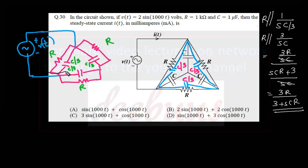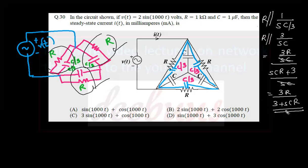This is basically the impedance of R parallel C/3, or R parallel with 1/S(C/3). Now checking at this side: one R parallel C/3 is in series with another R parallel C/3. So for this side, the total impedance must be 6R, that is 3R/(3+SCR) plus another 3R/(3+SCR). So the total combination of these two elements must be 6R/(3+SCR).